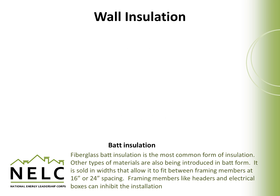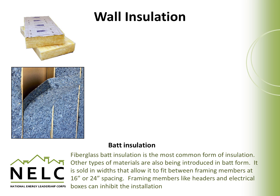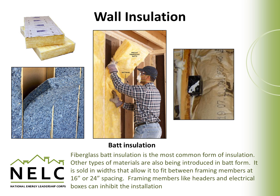Batt insulation is the most common form of insulation used in walls. While other materials are being introduced in batt form, fiberglass is the most common. Some non-fibrous or cotton-based materials or recycled content materials are also sold in batts. Batt insulation refers to insulation made in different widths to fit between framing members — walls built with studs at 16-inch or 24-inch centers. Framing members like headers and electrical boxes can inhibit installation due to its rigidity and the need to cut around obstructions.